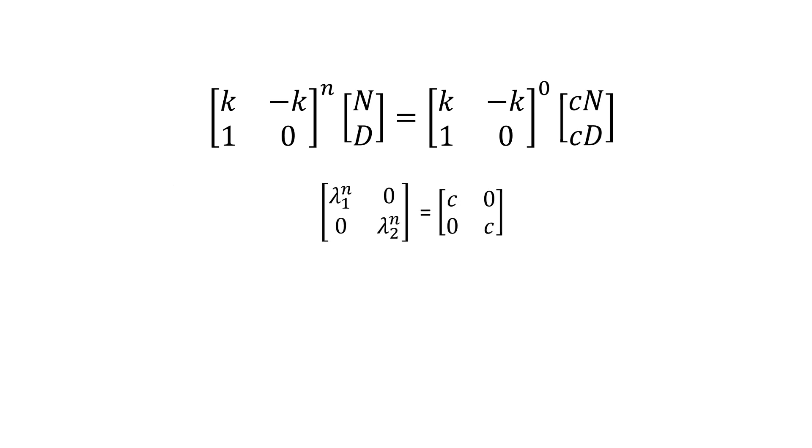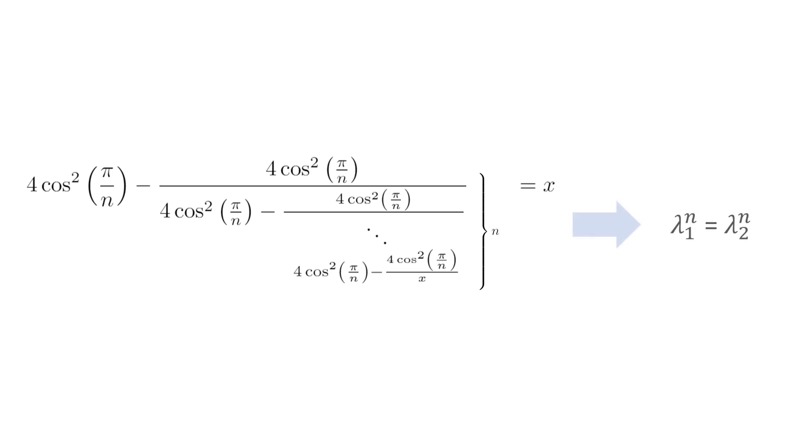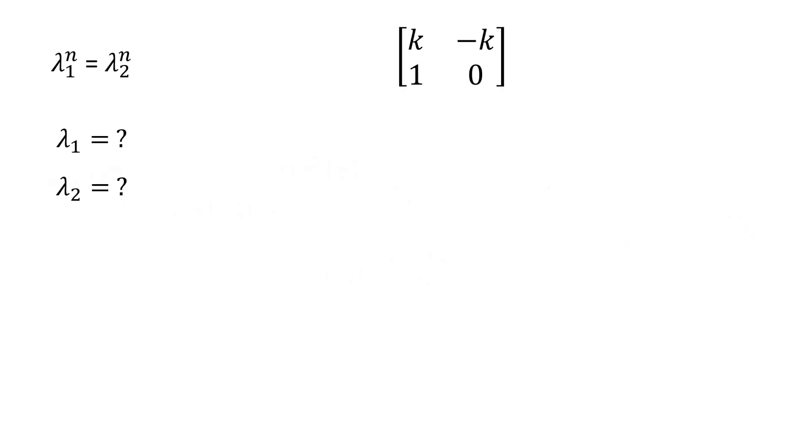Simplifying, we find that both eigenvalues to the power of n are equal to the same constant. They're equal. This is our new formulation of the problem. Compare this to doing the algebra to solve for k in the general case, where we had a messy, multilayer fraction equation with a variable number of layers. Now, our problem reduces to finding when λ1 to the n equals λ2 to the n, where λ1 and λ2 are the eigenvalues of the matrix.